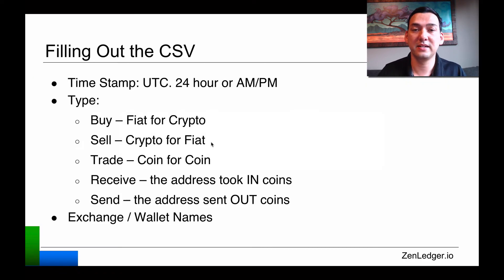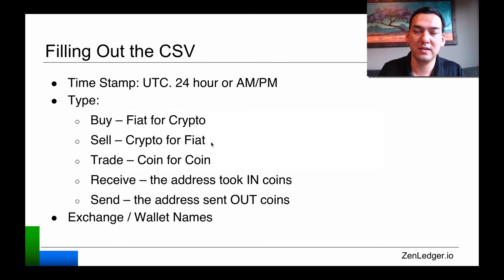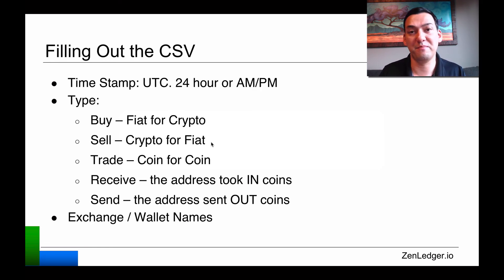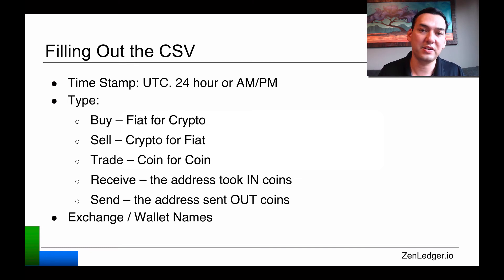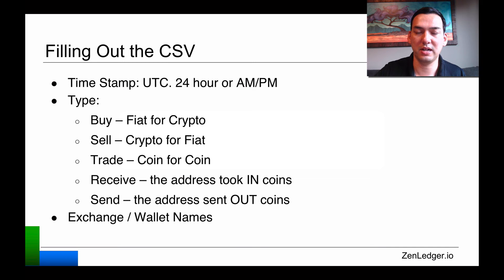To go over that again: timestamps are in universal timecode — put in the date first, then the time in 24-hour format. If you want 12-hour format, just add AM or PM, but 24-hour keeps it nice and simple. Then you have the types: buy is fiat to crypto, sell is crypto to fiat, trade is coin to coin, receive is when the address took in coins, and send is when the address sent out coins. For your own notes, you can also add exchange or wallet names to keep things organized.